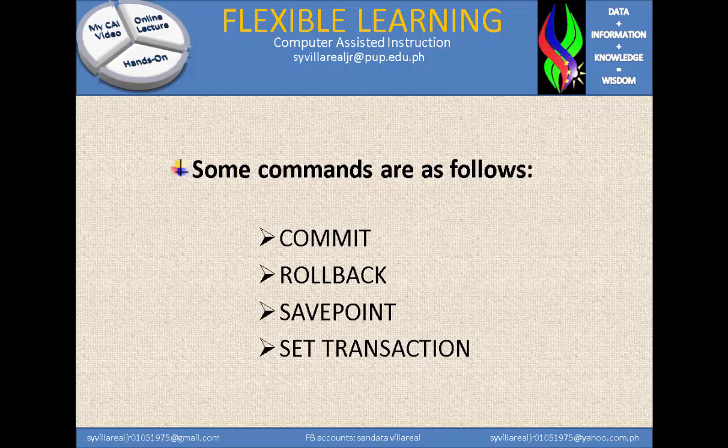Commit means you are fully aware of and confirming what you are going to pay. Rollback means reverting if there are changes — something like a factory defect where the buyer can return the item; that is what we call rollback in database programming. Save point is like saving all the products or items that are going to be purchased. And set transaction refers to when a person or company transacts with a business.